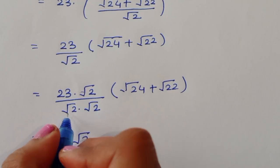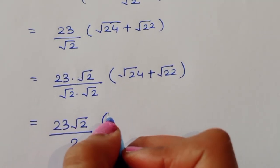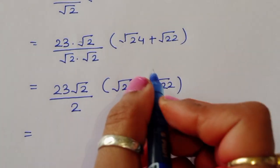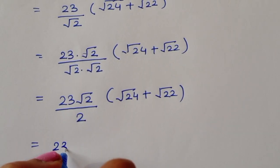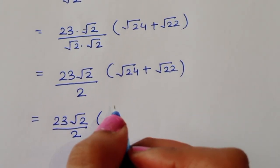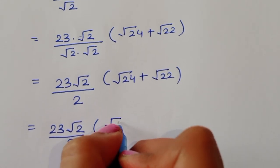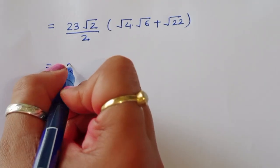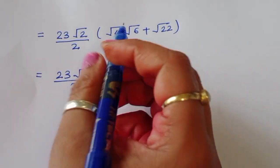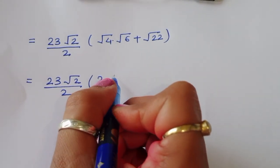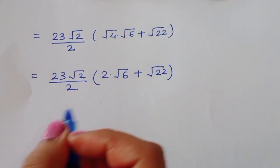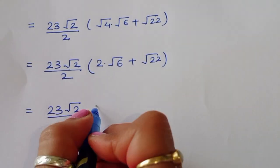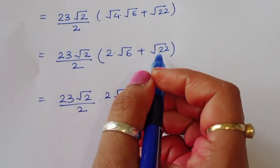Now simplifying: √24 equals √(4×6) equals √4 times √6. So we have 23 times √2 divided by 2 times (√4 times √6 plus √22). Since √4 equals 2, this becomes 23 times √2 divided by 2 times (2√6 plus √22).